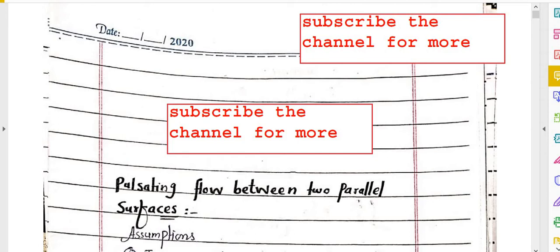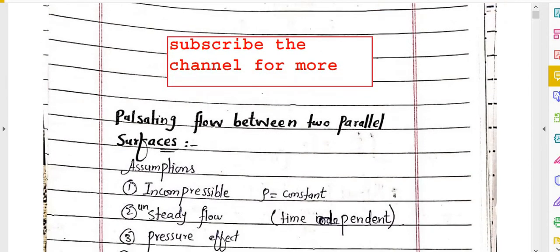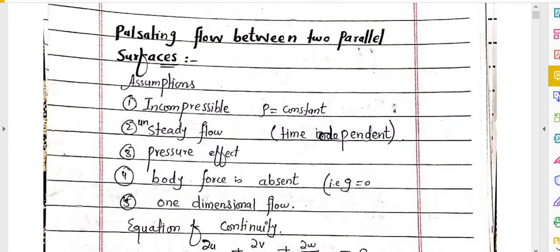First of all we will state our assumptions. The first assumption is about fluid: it is incompressible, meaning density will be constant. The second assumption is unsteady flow — a flow that depends upon time, i.e., time-dependent flow is called unsteady flow.